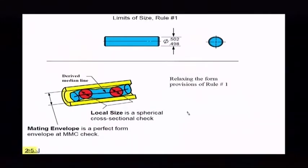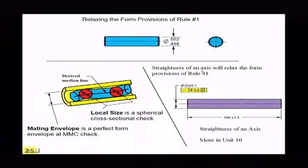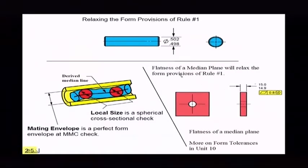Now, in the past if we wanted to relax those form provisions of rule one, you remember how we did it. What we could do is we could put straightness of an axis. That will relax the form provisions of rule one. Now there's another way to be able to do it if you had, not rather than a round part, but something that was a flat part. Then you could use flatness of a median plane. Now this is something new that's in the 2009 standard. I'm going to explain this a little bit later, how that works. It's replacing straightness. So those were two ways you could do it.